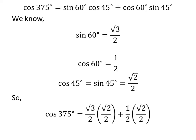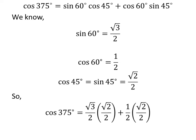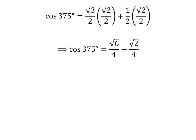We get cosine of 375 degrees is equal to square root of 3 over 2 times square root of 2 over 2, plus one half times square root of 2 over 2. Straight multiplication gives us cosine of 375 degrees is equal to square root of 6 over 4 plus square root of 2 over 4.